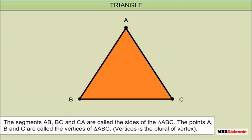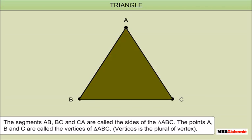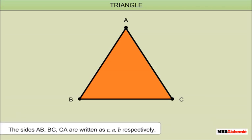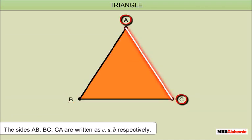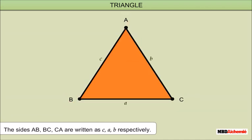The points A, B and C are called vertices — plural of vertex — of the triangle ABC. These sides AB, BC, CA are written as c, a, b respectively.